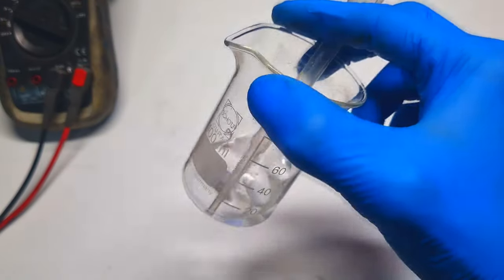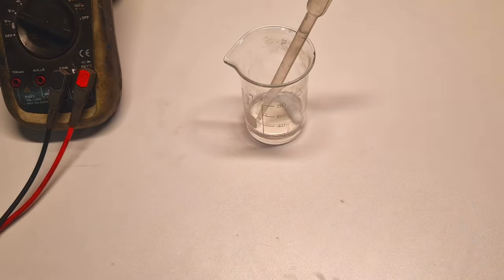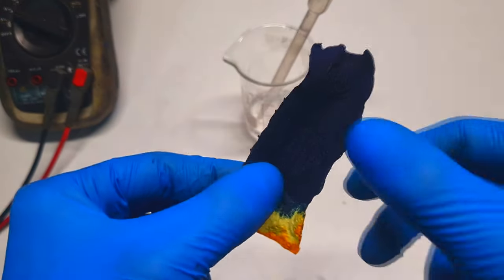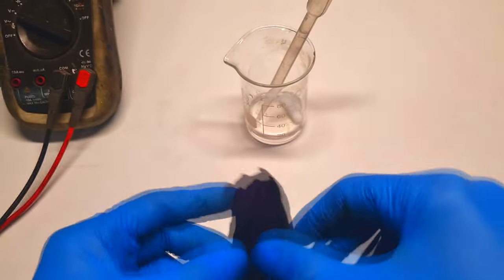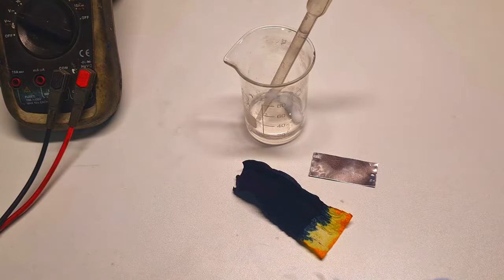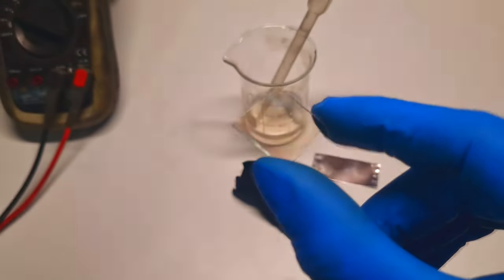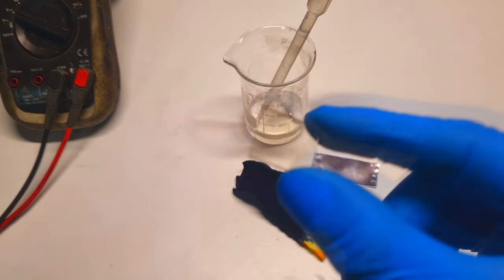To make this battery, I will need some electrolyte which is 3 molar potassium chloride, Prussian blue on this filter paper, some aluminum, and of course I will also use this indium tin oxide glass which is conductive glass.